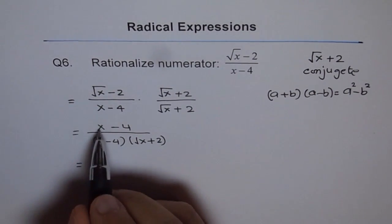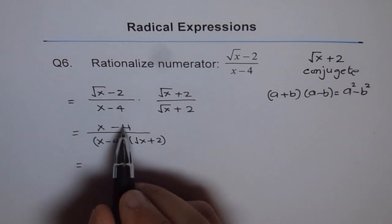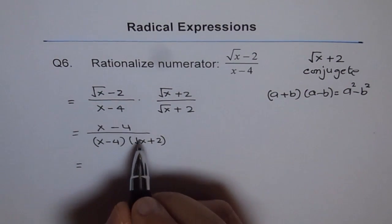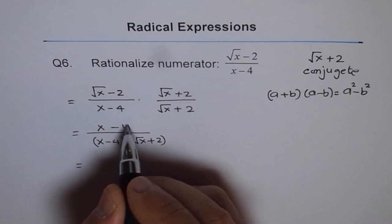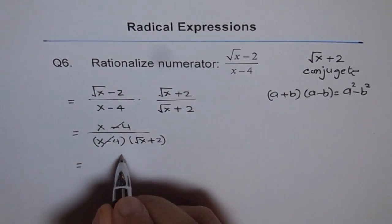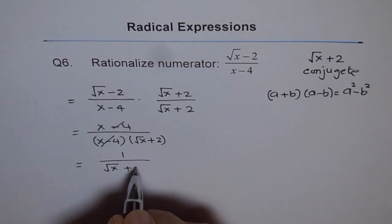Now as you can see, x minus 4 and x minus 4 are common in numerator and denominator and they can be cancelled. Once you cancel them, we get 1 over square root of x plus 2.